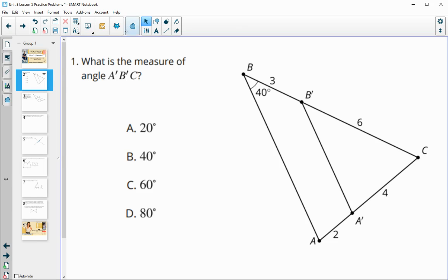Number one asks us to come up with the measure of angle A'B'C', so this angle here. Since this A'B'C' is a dilation of ABC, we know that the angles will stay the same measure, so 40 degrees is going to be the measure of B'.